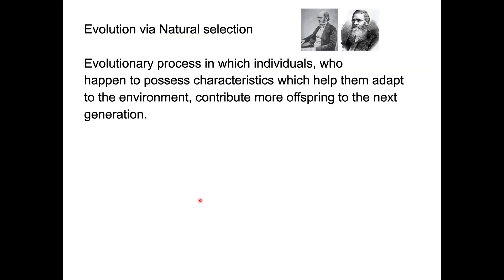Darwin argued that natural selection is an evolutionary process in which individuals who happen to possess characteristics that help them adapt to the environment contribute more offspring to the next generation. To discuss this with respect to giraffes, according to evolution by natural selection, the mechanism is that you have a population of giraffes.